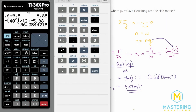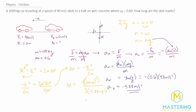The distance the car traveled is 136 meters. Rounded to two significant figures, that gives us 140 meters for how far the car went as it was skidding on the wet concrete.